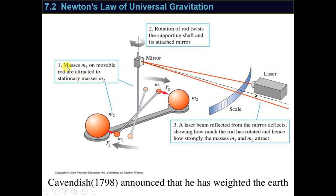The masses M1 on the movable rod are attracted to stationary masses M2. He also brought two very large masses near these small masses. These large masses are very big compared to the small masses. According to what we learned, every object attracts every other object — that is Newton's law of universal gravitation.